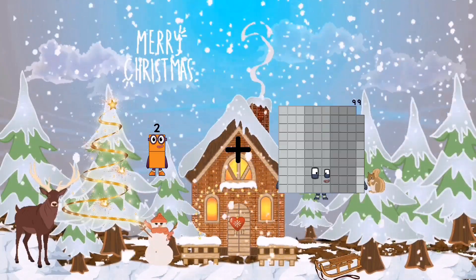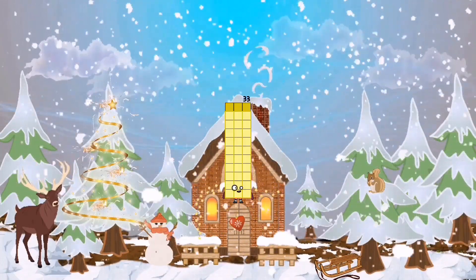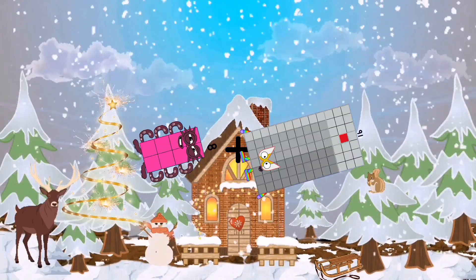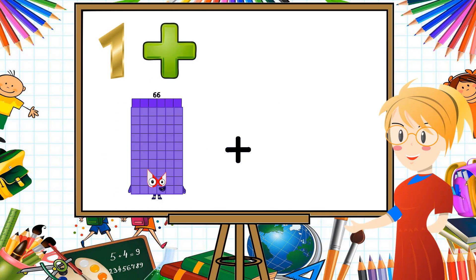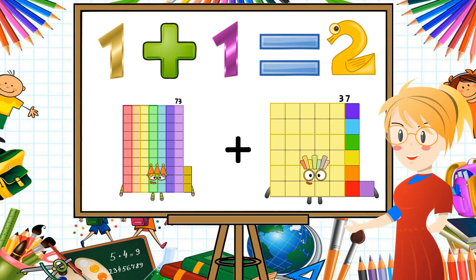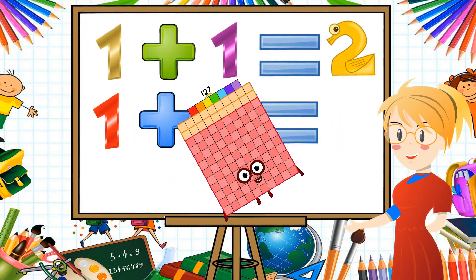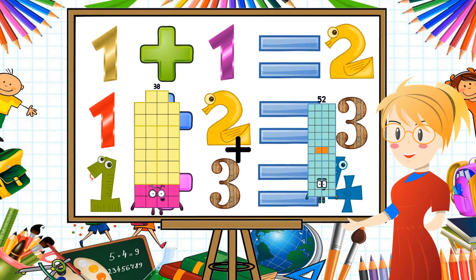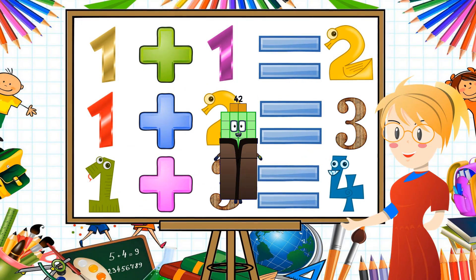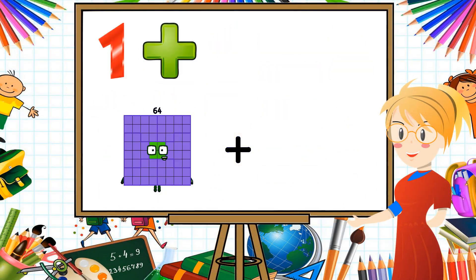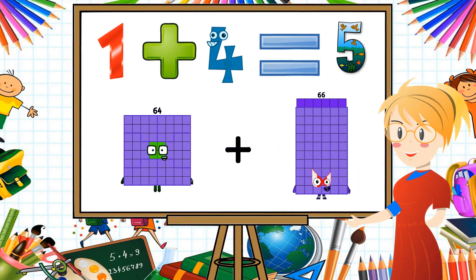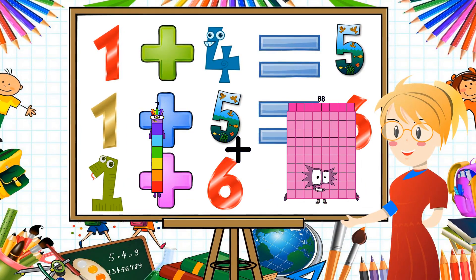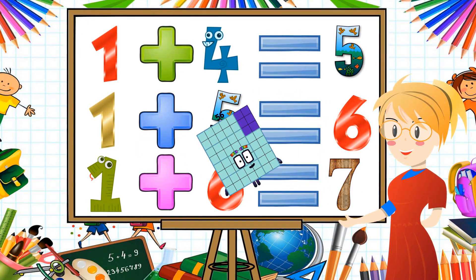2 plus 31 equals 33. 8 plus 91 equals 99. 73 plus 54 equals 127. 38 plus 4 equals 42. 64 plus 66 equals 130. 7 plus 49 equals 56.